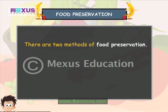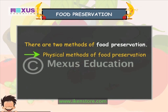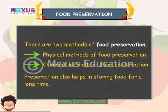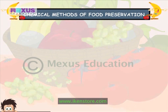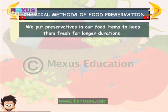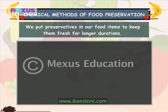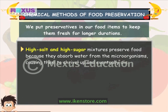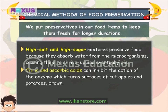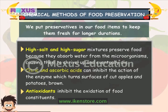There are two methods for the preservation of foods: physical methods of preservation and chemical methods of preservation. Preservation also helps in storing food for a long time. We put preservatives in our food items to keep them fresh for longer durations. High salt and high sugar mixtures preserve food because they absorb water from the microorganisms, causing them to shrivel up and eventually die. Citric and ascorbic acids can inhibit the action of the enzyme which turns the surfaces of cut apples and potatoes brown. Antioxidants inhibit the oxidation of food constituents.